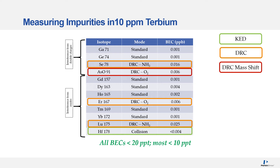Now we're going to look at measuring impurities in 10 ppm terbium. The interferences from the double charges are very similar to the last example. However, the interferences from the oxides are a mixture of standard, DRC oxygen, and collision mode. Comparing this to the gadolinium slide, you can see that different elements now need different modes to get the best BECs.